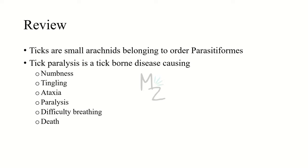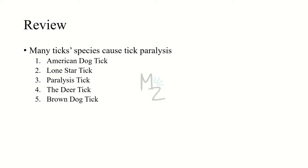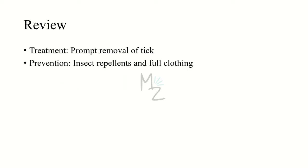Let's review everything quickly. Ticks are small arachnids belonging to the super order Parasitiforms. Tick paralysis is a tick-borne disease causing numbness, tingling, ataxia, paralysis, and difficulty breathing. Many tick species are responsible, including the American dog tick, lone star tick, paralysis tick, deer tick, and brown dog tick. Treatment is the prompt removal of the tick, and prevention involves insect repellents and full clothing coverage.